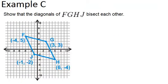In example C, it says, show that the diagonals of FGHJ bisect each other. So the diagonals are the lines that connect opposite angles or opposite vertices. And to show that the diagonals bisect each other, what we should do is show that they have the same midpoint, because that means that they meet in each other's middles, and that they bisect each other.